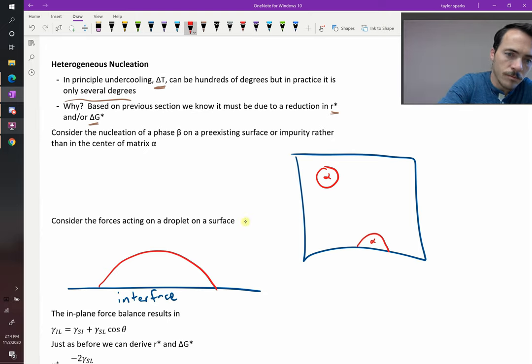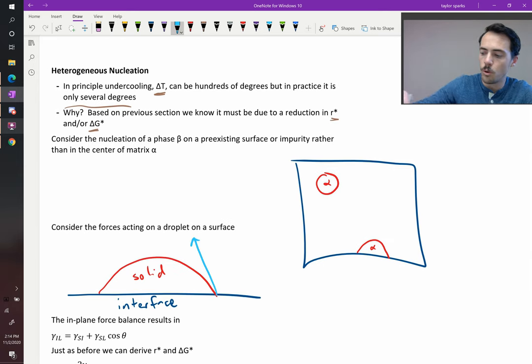Now, all along there, we have the following surface energies. You've got one surface energy acting right here. We'll call this the surface energy between the solid and the liquid. So γsl, between the solid and the liquid. You've also got a surface energy right here.